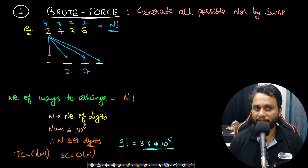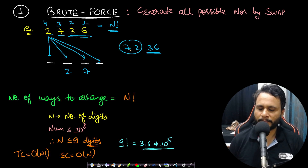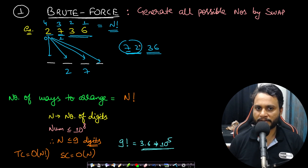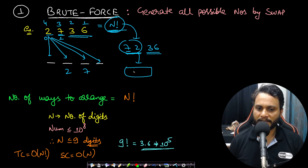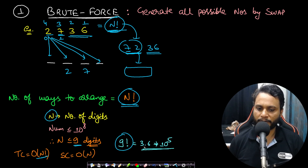Out of these arrangements, some will be valid and some invalid. Since one swap is allowed, there can be a maximum of only two digits which are out of place. For example, 7236 — 3 and 6 should be at their original positions. No more than two digits should be out of place. I will try all possible arrangements, filter only those following the constraint, and find the maximum. This takes O(n!) time, but since n is at most 9, that is 3.6 × 10^5, so it runs within one second.